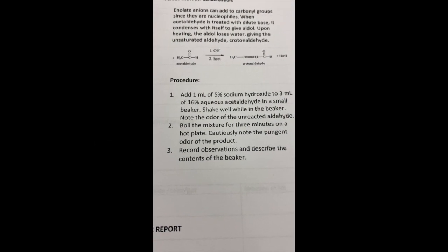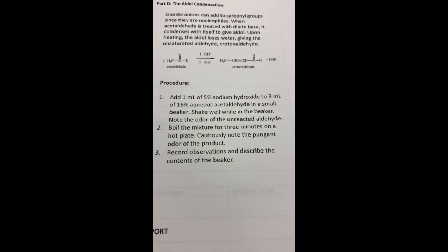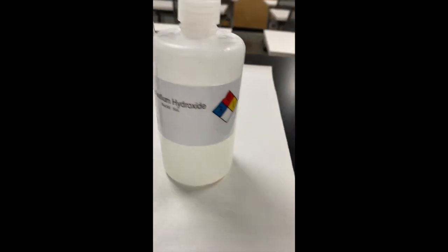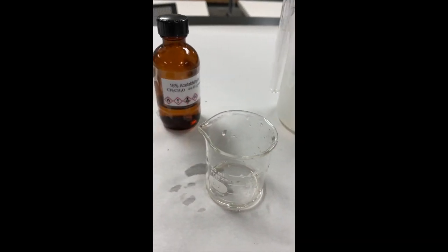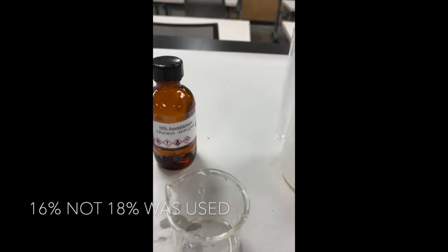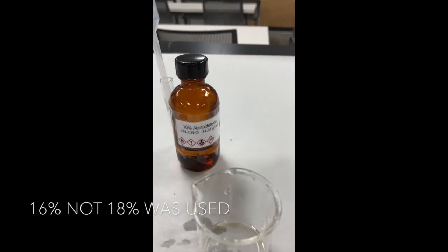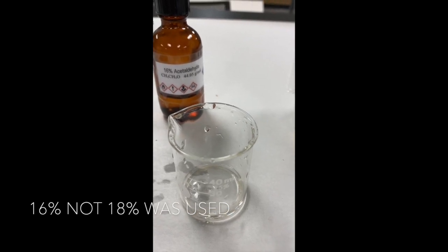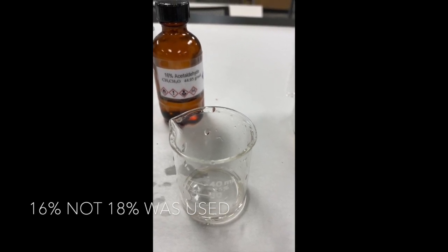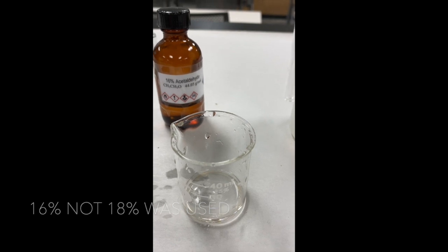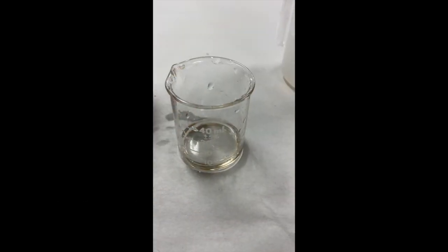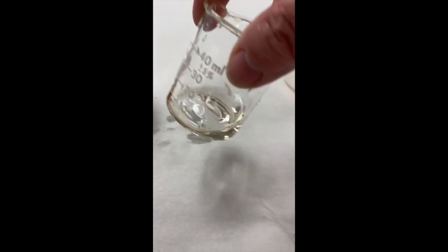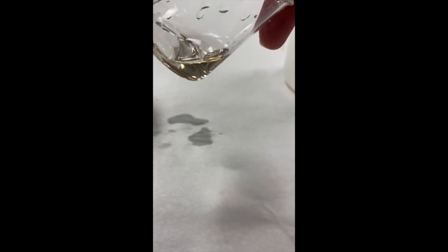It's time for the aldol condensation. I've already added one mil of 5% sodium hydroxide to my beaker. I'm going to be adding the three mils of the 18% to the beaker and then I'm going to shake it. I'm going to notice the odor and then boil it for three minutes and then we'll be back. So after adding both components, there's no precipitate. Let's go ahead and heat it up.